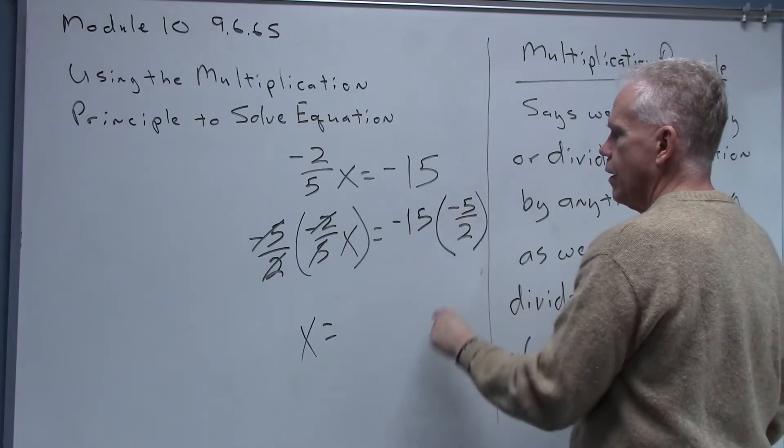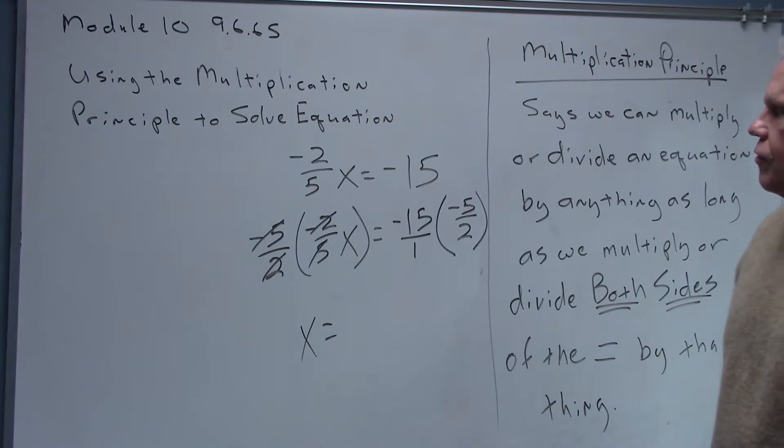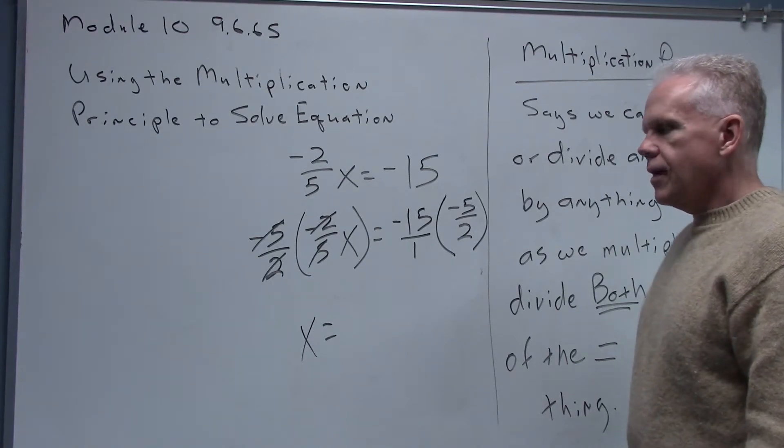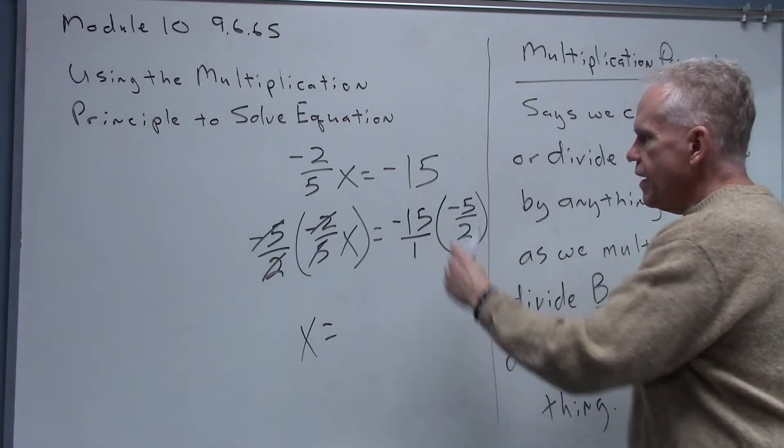All right, now I'm going to put my negative fifteen over a one to get a little bit more of a fraction feel right there. And I'm going to look for anything I might be able to cancel. Dadgummit, I don't see anything. I don't see anything that'll cancel. The fifteen won't cancel with the two, the five with the one, nothing there.